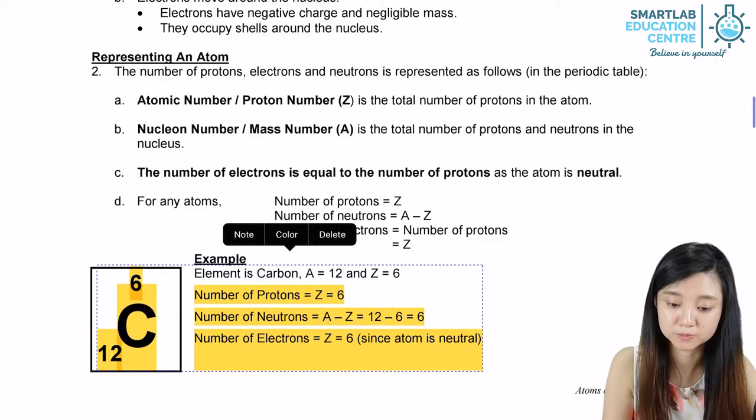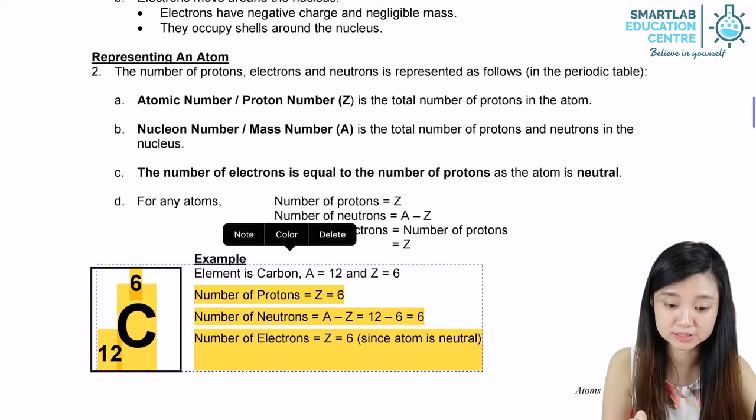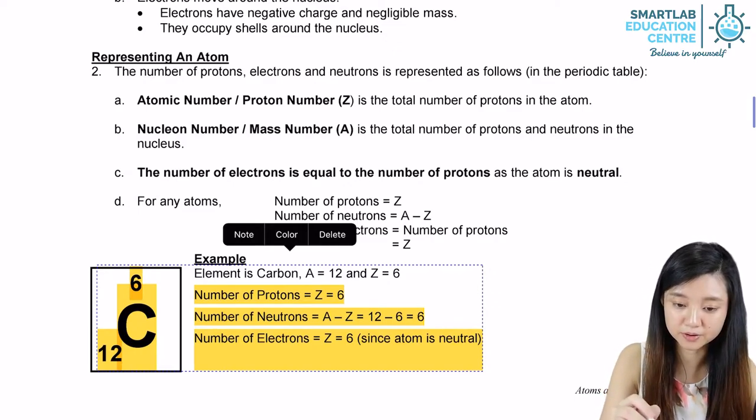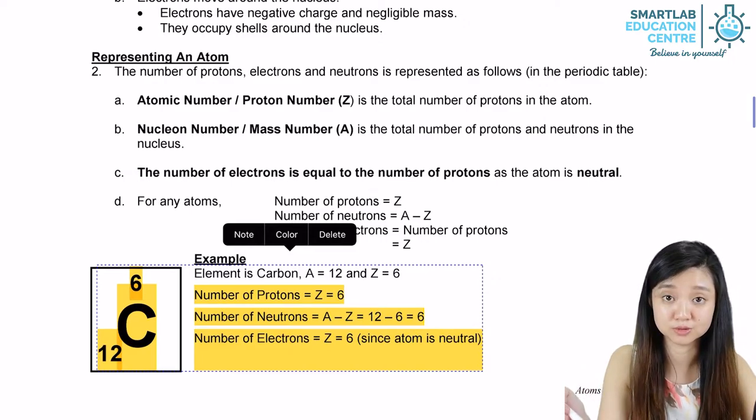The small number that is on top will represent the number of protons in that atom, while the number at the bottom will represent the sum of the protons and neutrons in the nucleus.